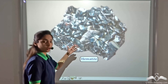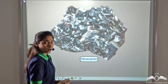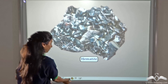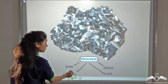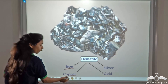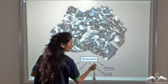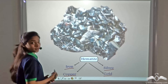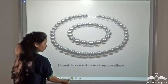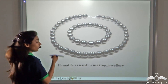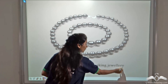This is a picture of the mineral hematite. You can obtain metals such as iron, copper, silver and gold from this mineral. This hematite is also used in making jewellery.